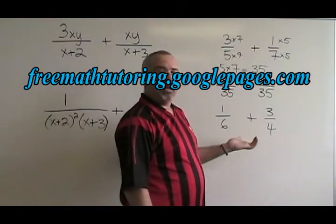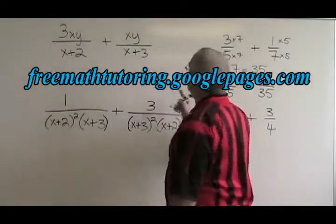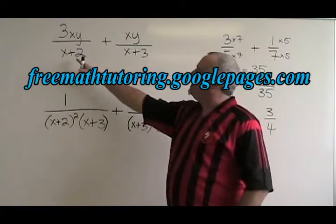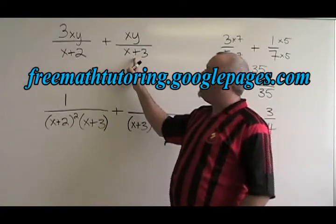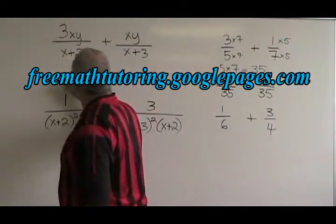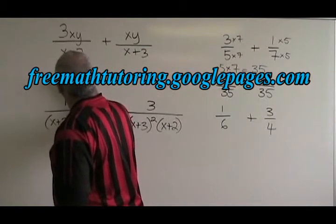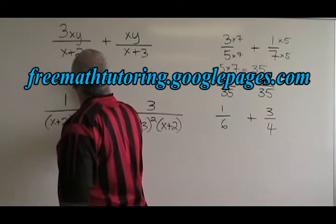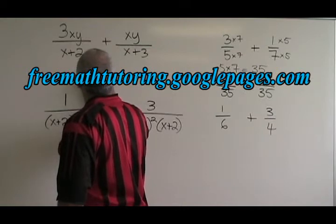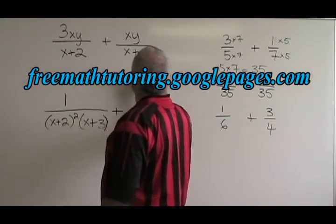This works the same as it does in algebraic fractions, and let's try it in this example. If we just multiply the two denominators we already have, we get x plus 2 times x plus 3 in both fractions.